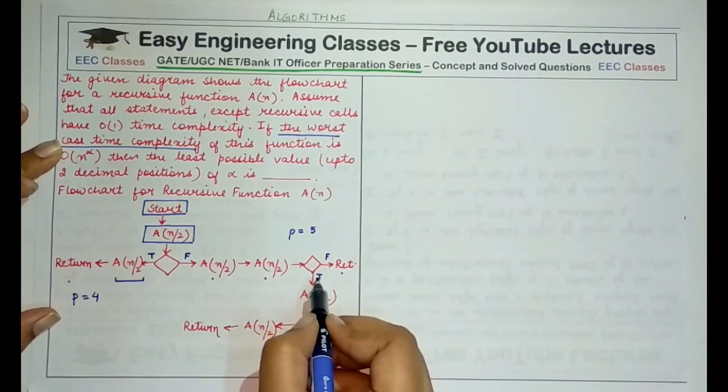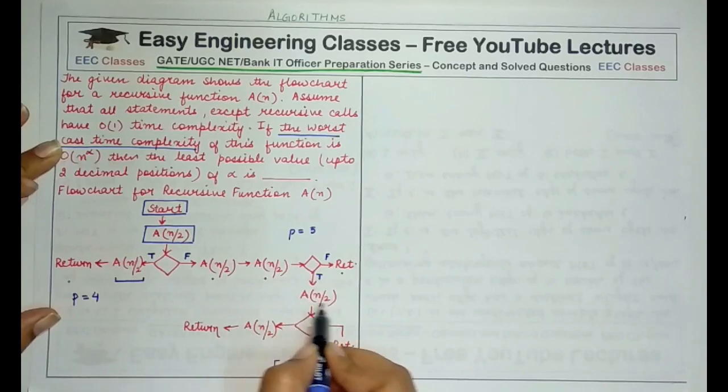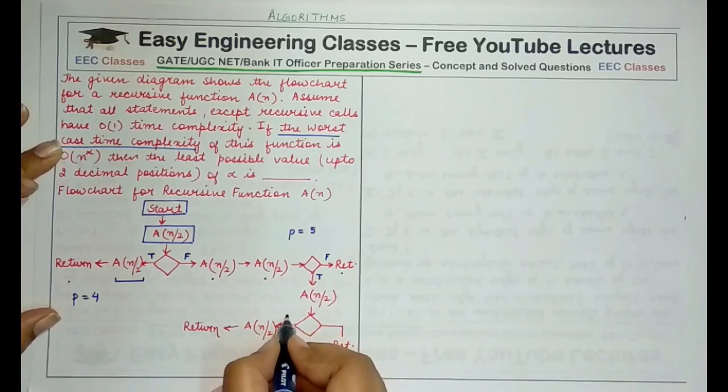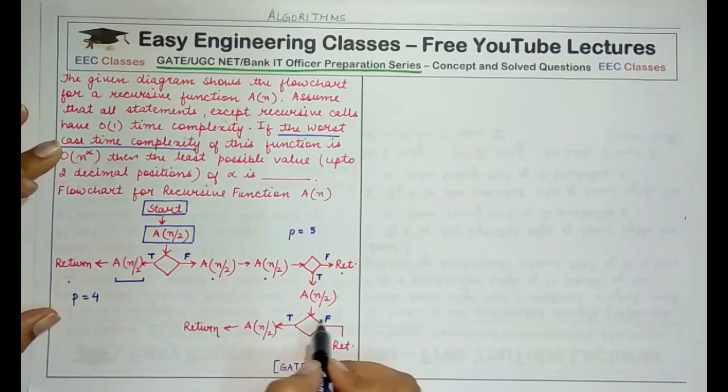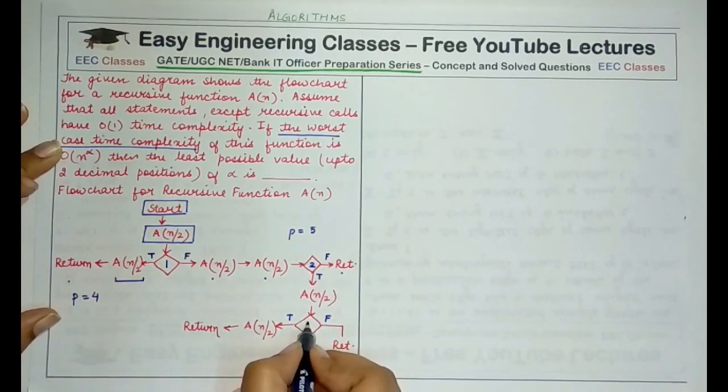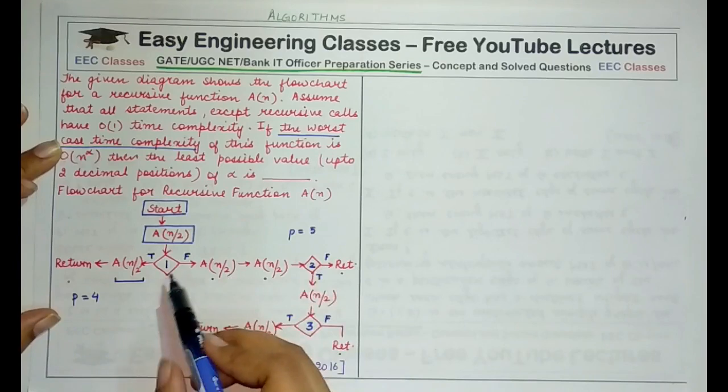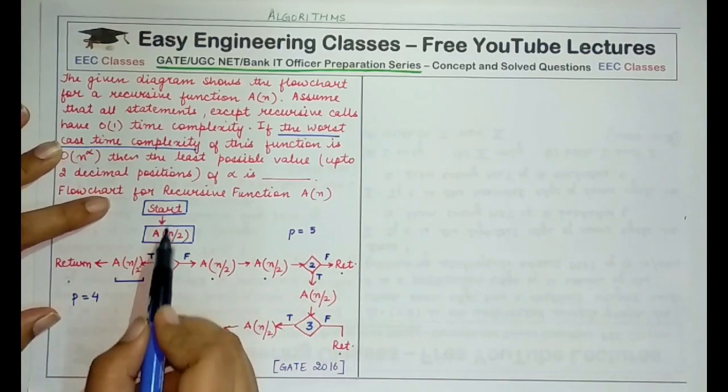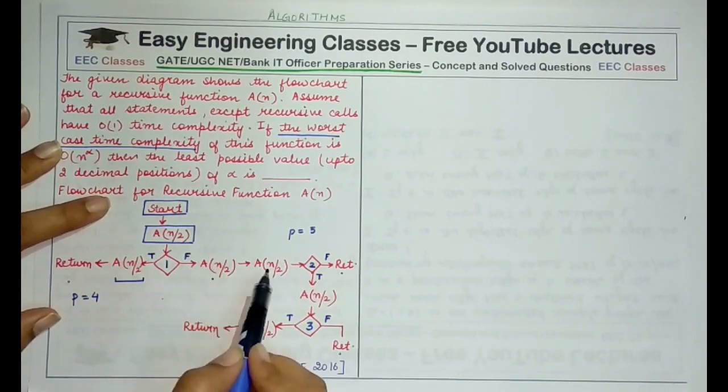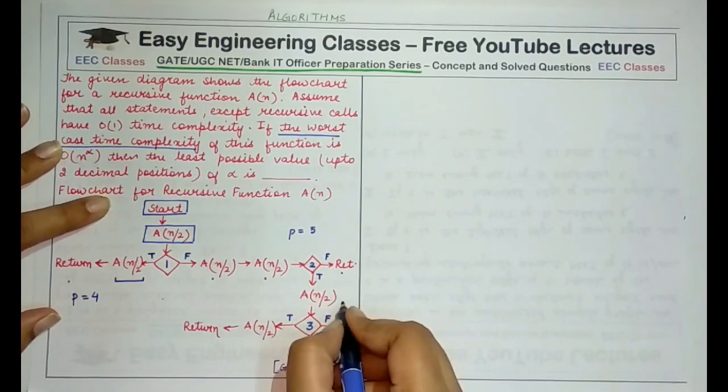Now let's assume that the decision resulted in true. So what would be done further? Another call would be made to the function A and then there is another decision. So if this decision results - the third decision - this was the first decision node, the second decision node, and the third decision node. If the third decision node results into false, it would return here. So what is the length of the path followed? We started with start. So 1, 2, 3, 4, then 5, then 6. So this path length is 6.